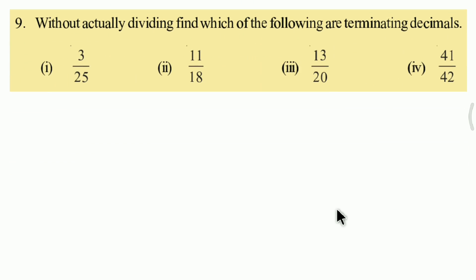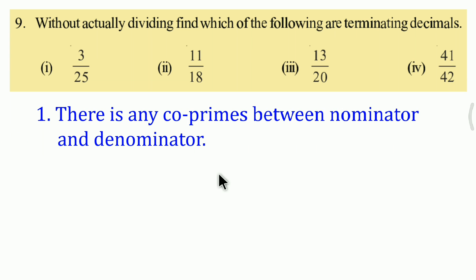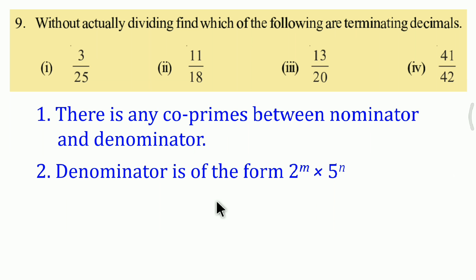Next question, 9 to 1. Without actually dividing, find which of the following are terminating decimals. In p by q form, without doing the division, we need to know whether the decimal terminates or not. For this we check two properties: first, whether the numerator and denominator are co-primes; second, whether the denominator is of the form 2 to the power m multiplied by 5 to the power n.